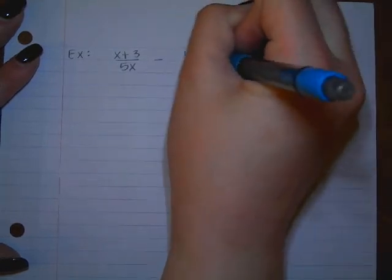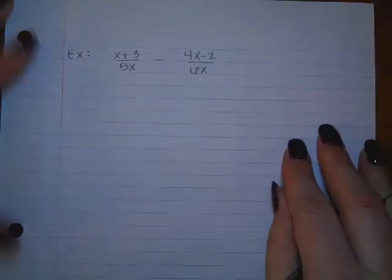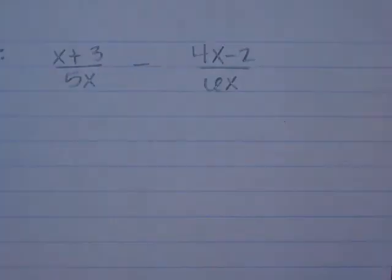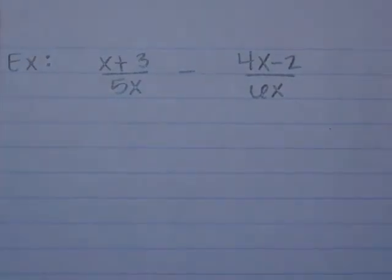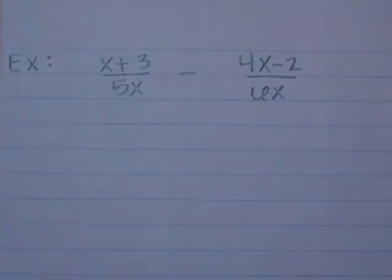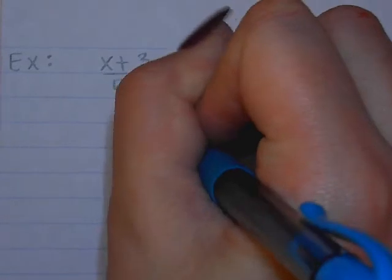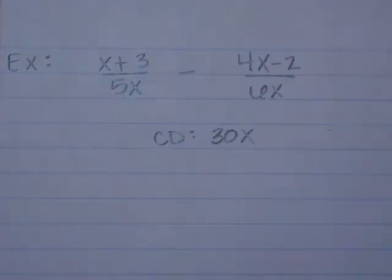The first problem is x plus 3 over 5x minus 4x minus 2 over 6x. Can anyone tell what the common denominator is? We need an x for sure. The common denominator is 5 times 6, which is 30, and then we for sure need an x with each of those.